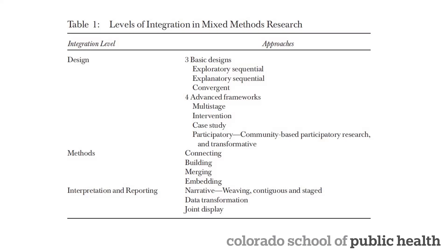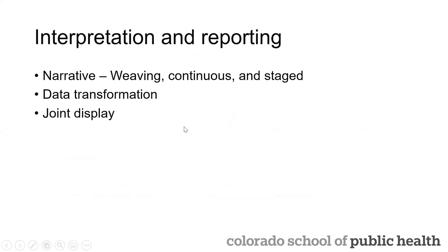Now charging forward into interpretation and reporting — that kind of dissemination and reporting element. There are three things to touch on: the narrative, which is broken down into weaving, continuous, and staged reporting; data transformation, which covers when one type of data is converted to another; and joint displays, which involves creating a visual that represents both qualitative and quantitative elements.